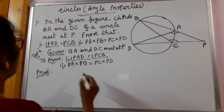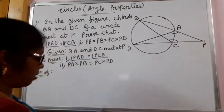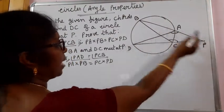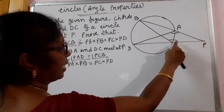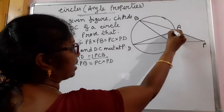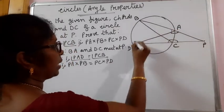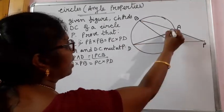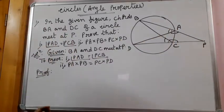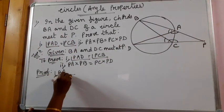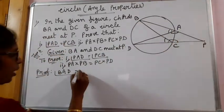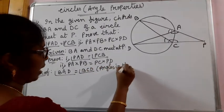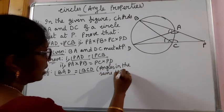First of all, let us work out to make these two angles equal. We can see angle PAD and angle PCB. The linear pair for angle PAD is angle BAD, and for angle PCB is angle BCD. Angle BAD is equal to angle BCD because they are the angles in the same segment.